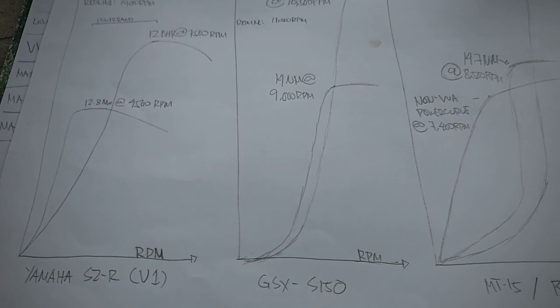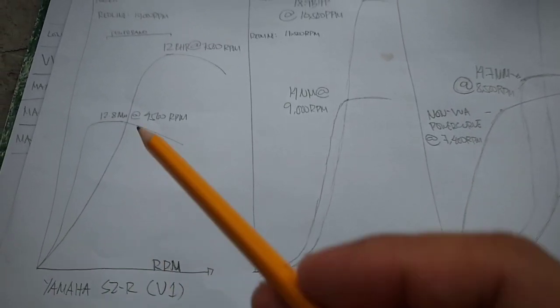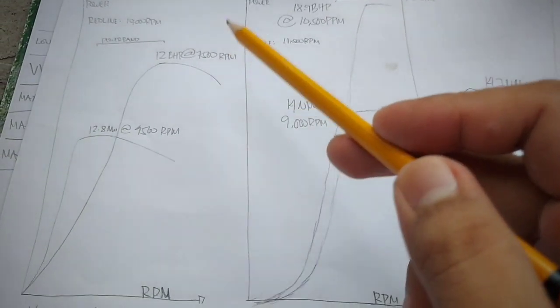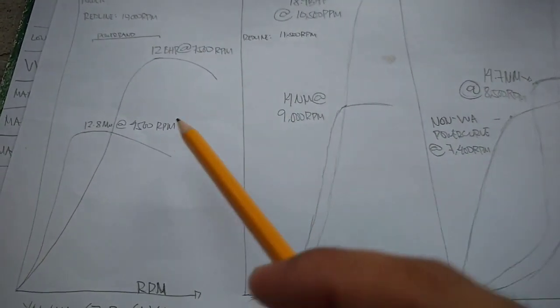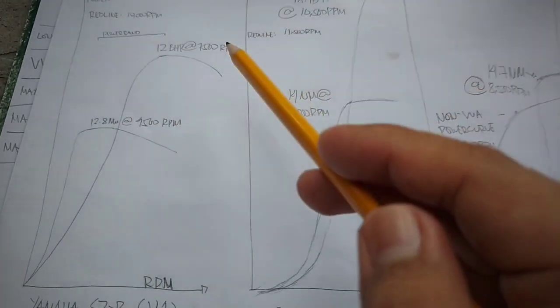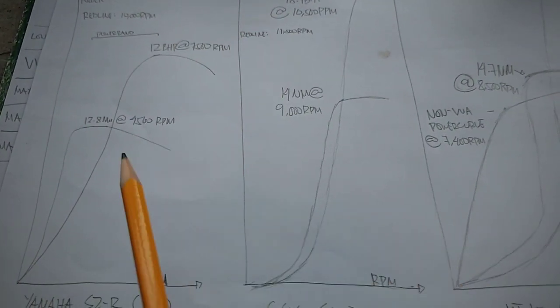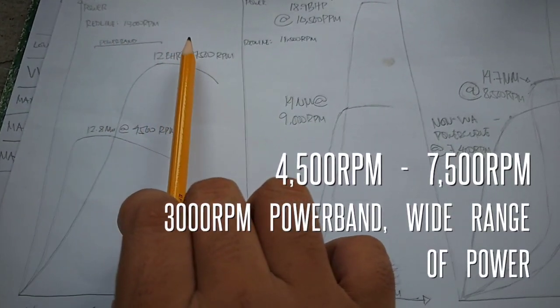Let's see kay Yamaha SZ, power band niya mahanapan natin between 4,500 RPM and then all the way to 7,500 RPM. So below 4,500 and above 7,500, wala siyang hatak masyado kumpara sa part na ito. So ito ang kanyang power band.